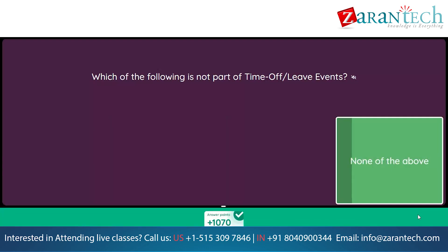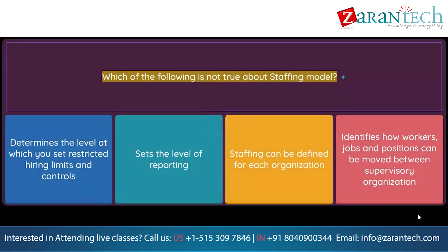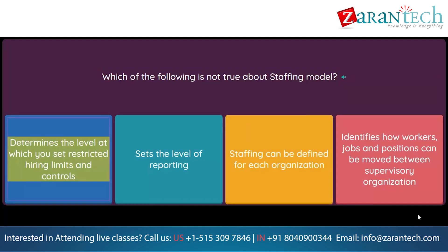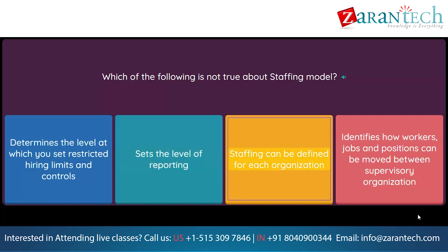Which of the following is not true about staffing model? Option 1: Determines the level at which you set restricted hiring limits and controls. Option 2: Sets the level of reporting. Option 3: Staffing can be defined for each organization. Option 4: Identifies how workers, jobs, and positions can be moved between supervisory organizations.